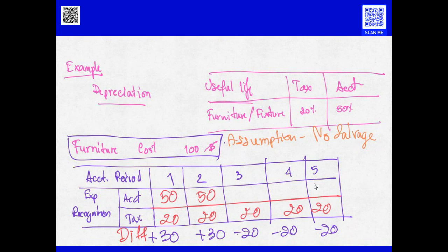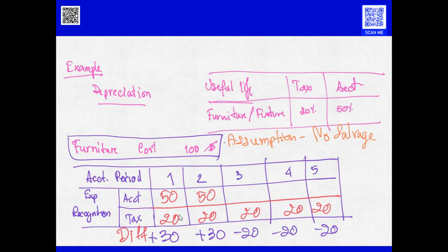If we look at the detail in figures — for example, furniture costs 100 baht — it will take two accounting periods to recognize the expense for accounting: year one and year two, each at 50%, assuming no salvage value. But for tax, only 20 baht is allowed as expense in each accounting period. So in accounting period one, depreciation in accounting exceeds the tax amount, and we have to add back the difference of 30 baht because the expense in accounting is too high.